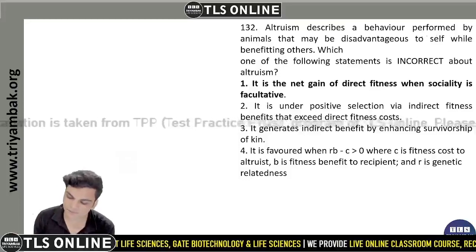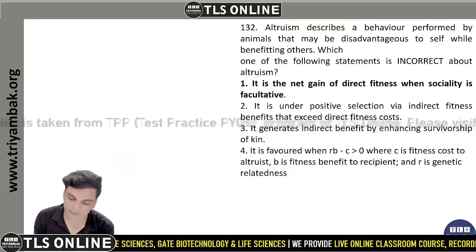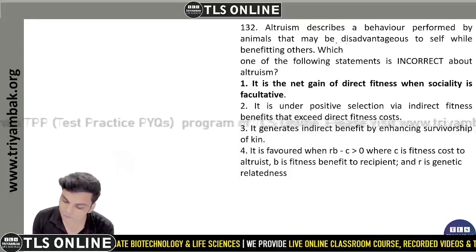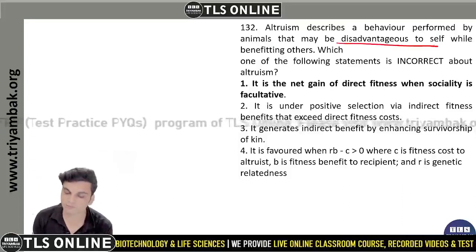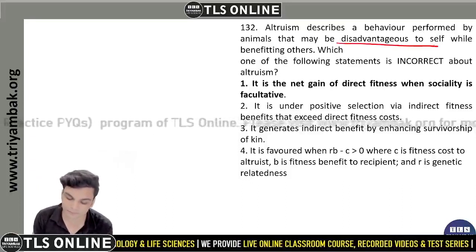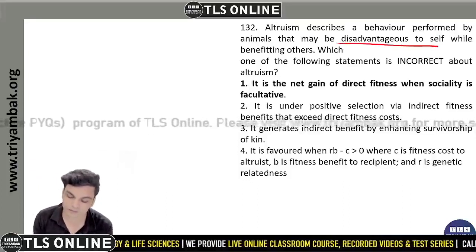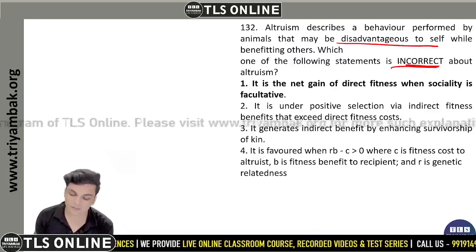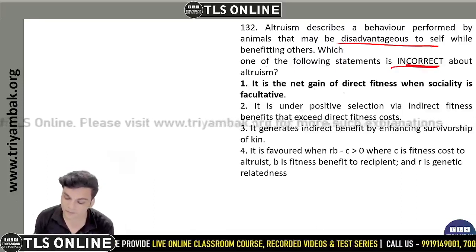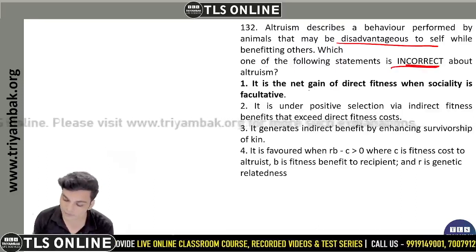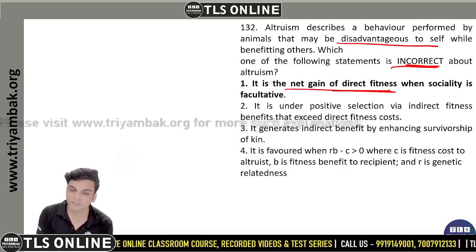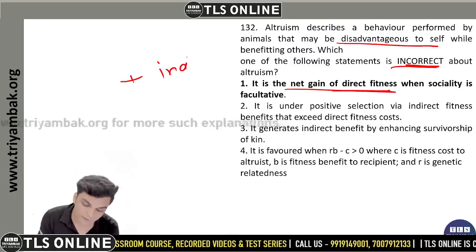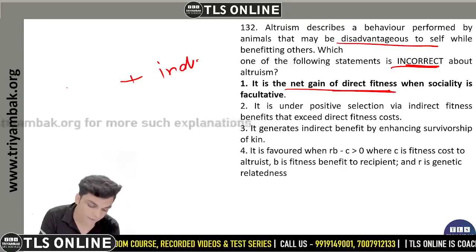Altruism describes behavior performed by an animal that may be disadvantageous to self — a form of self-sacrifice — while providing benefit to another. One of the following statements is incorrect. The net gain of direct fitness — net gain of direct fitness — can be described as direct plus indirect fitness. The new type of gain can be either direct or indirect.